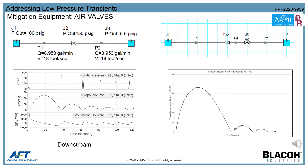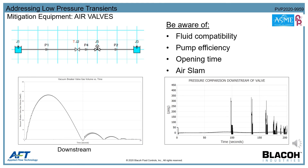Moving on to mitigation equipment, beginning with air vacuum valves. When a system experiences a significant dip in pressure leading to cavitation, one method of mitigation is an air vacuum and release valve that opens the system to atmosphere, drawing in air to allow the system to equalize. For some systems, this is all the mitigation needed. However, the first challenge to be aware of is fluid compatibility — drawing air into a highly combustible hydrocarbon application is extremely dangerous, and another closed-type surge mitigation device should be considered.